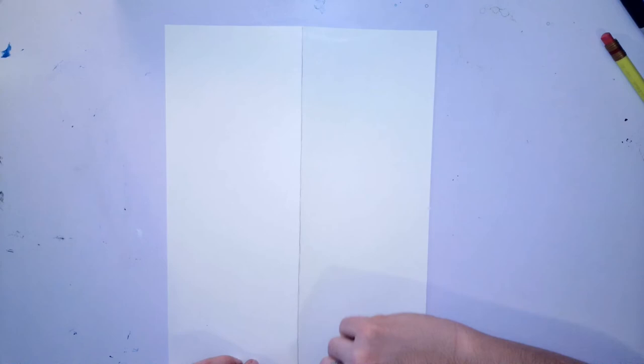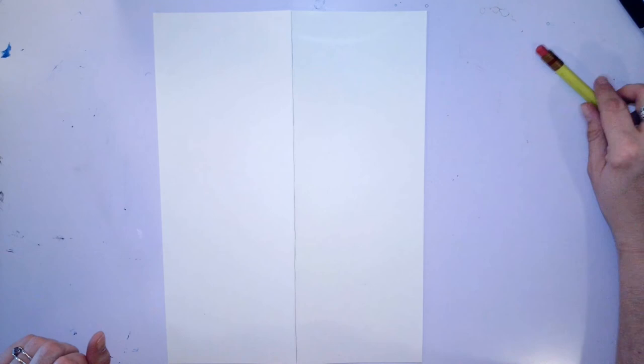So I went over my line in pencil just so I can see it a little bit better, but I'll erase it at the end. If you want to trace over your pencil you can just do it lightly so it's easy to erase.